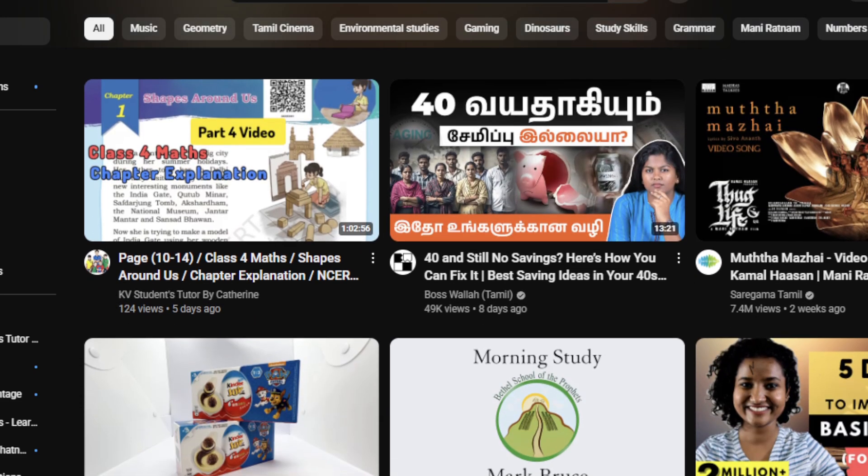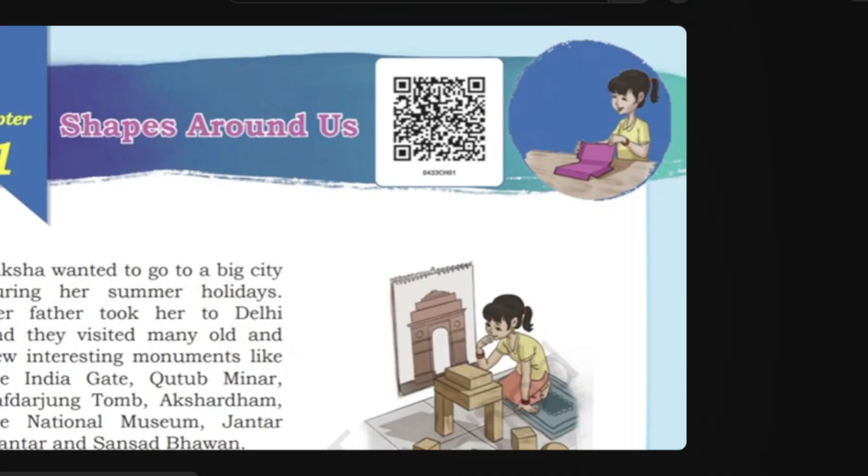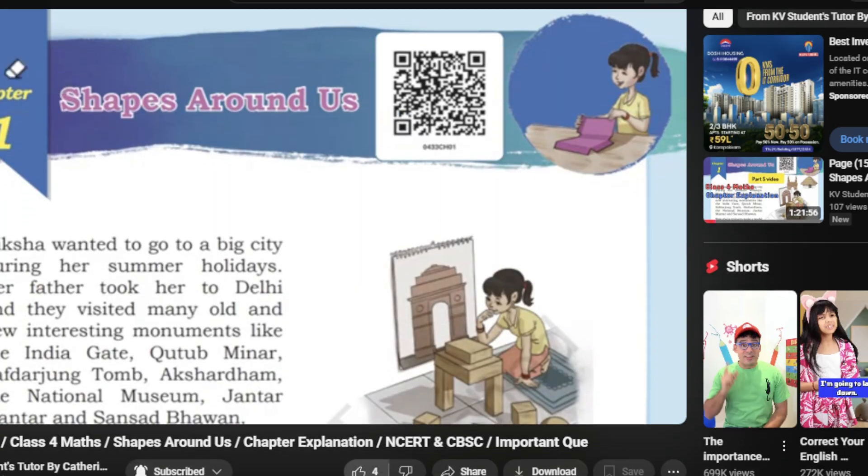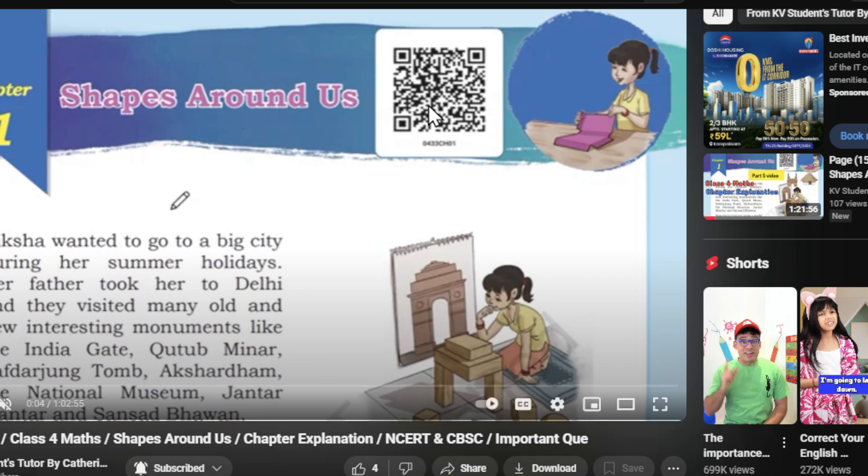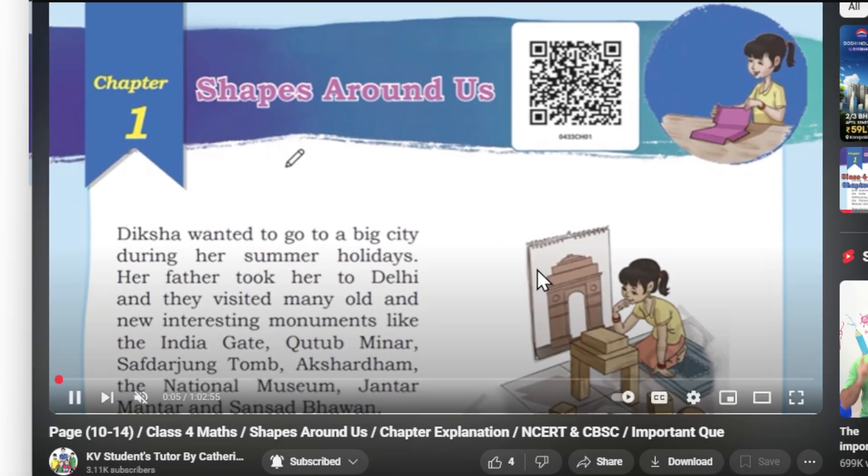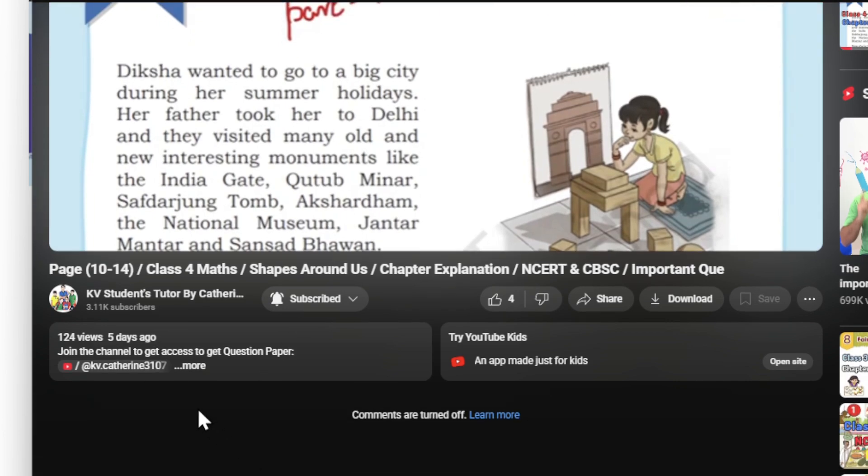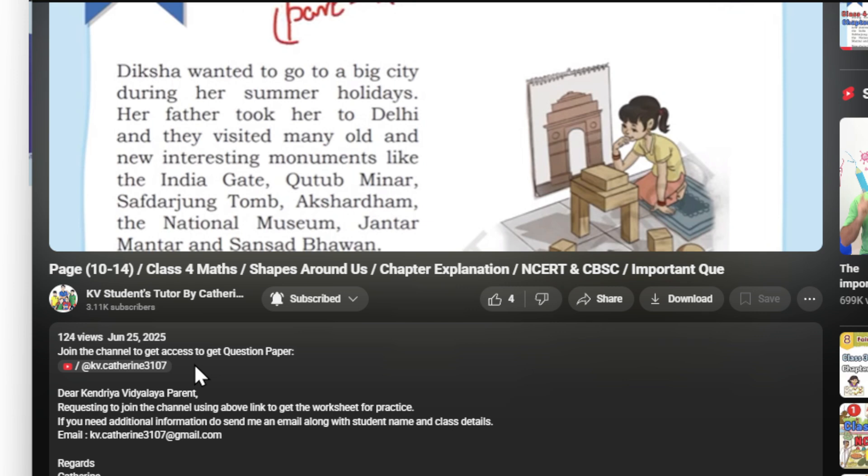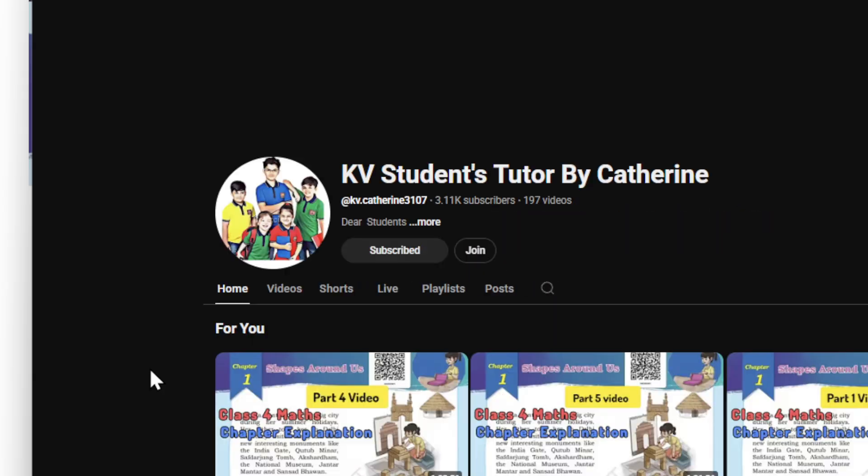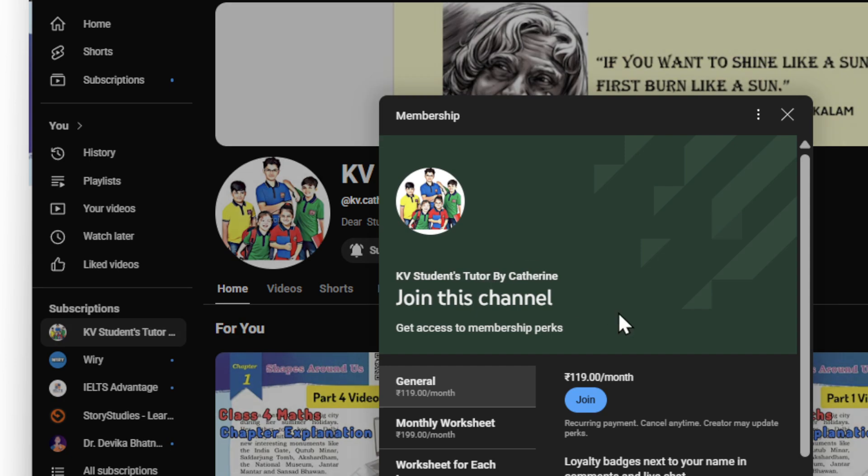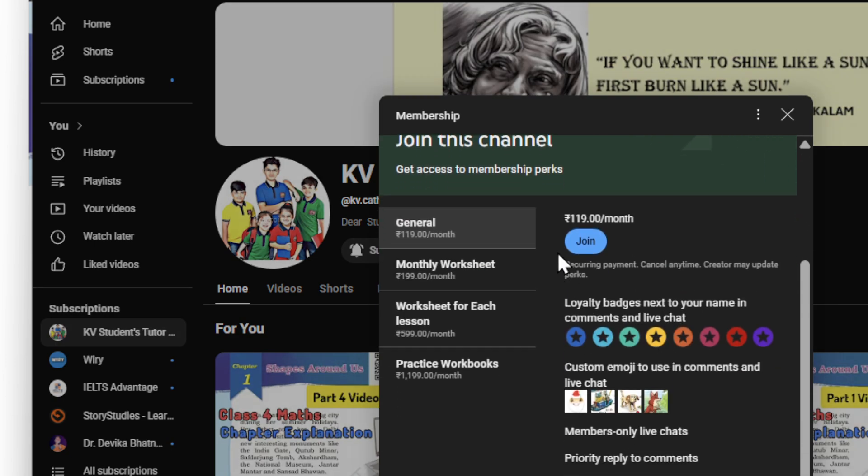Click on the part 4 video and you have to come down. There is an option called more, that is description. You have to click that and the link is here. Click the link. It will take you to the join channel. You have to click join option.